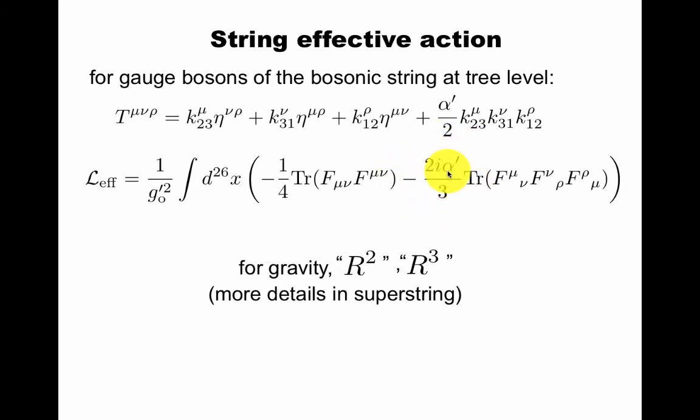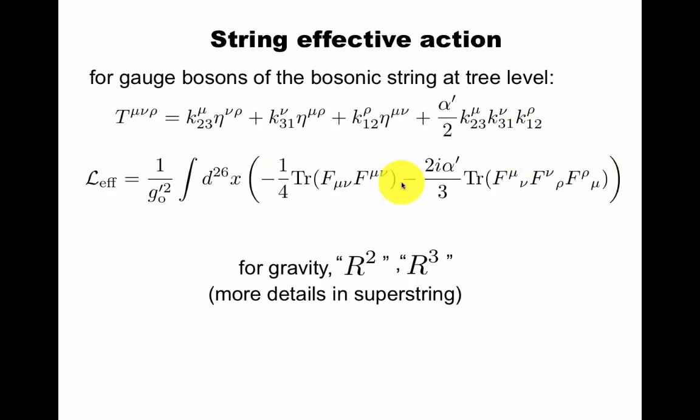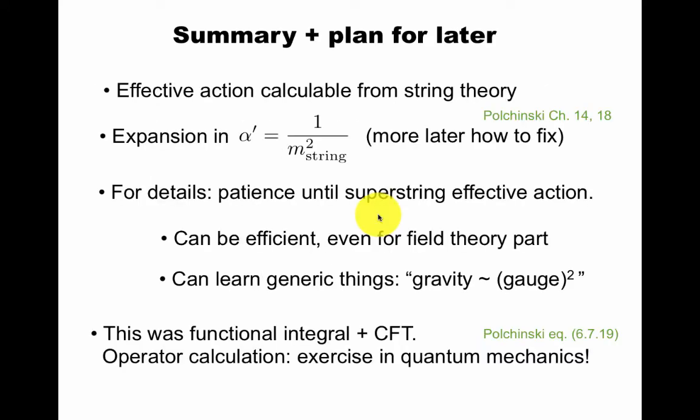Now what about this? This is not supposed to be a free parameter. For now, you can think of it as a black box that generates this dilaton parameter. Also, higher corrections to this effective action will just have this dilaton parameter. Be patient until the super string. Just for now, the point is it can be efficient to compute things in string theory, even if you just wanted the field theory limit. We'll see that later. You can learn generic things, like this idea about gravity being the square of gauge theory. We saw it even in the bosonic string, even though we know we're not going to directly interpret the bosonic string. We got this idea that we can study more.